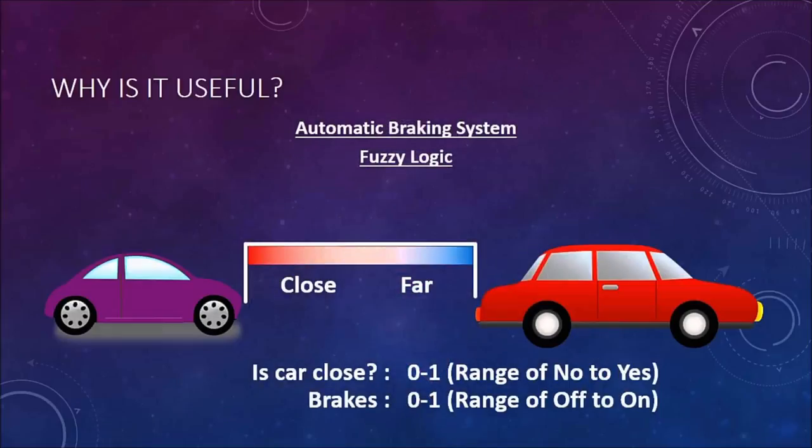Fuzzy logic was introduced to match the thinking of the human mind. You can make a robot, but you cannot teach human values to it because the robot takes an exact yes or no. But if you can make it think like a human mind — with some fuzziness, where it can work with imprecise values and still make good decisions — that is very useful. For example, if a person is approaching and their face is not visible, a computer cannot identify the exact person.